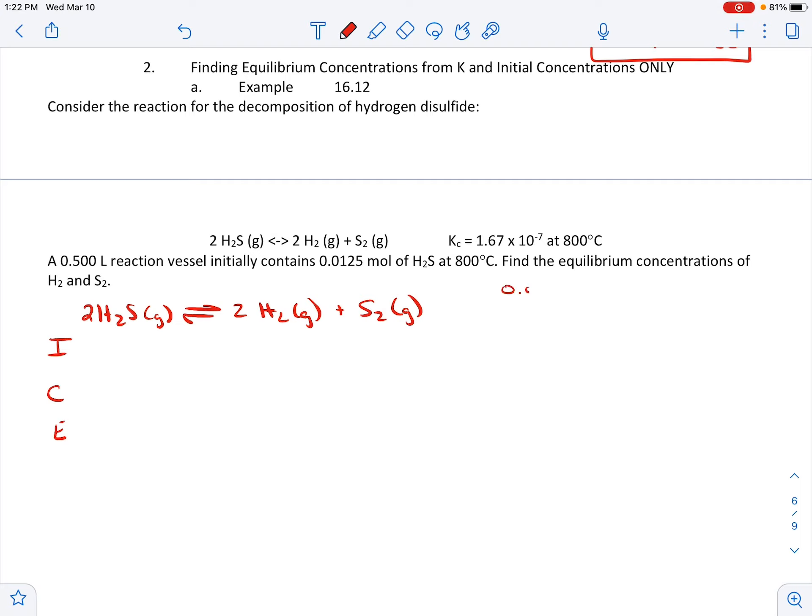For H2S, we're going to have to take 0.0125 and divide by 0.5 liters to get our molarity. We get 0.025. So that is our initial concentration here. These are going to be zero. Our change then is going to be minus 2X plus 2X. This is just going to be X because it's a single one. Those twos came from the two out front, our coefficients. We're going to combine these, so we've got 0.025 minus 2X. This is just going to be 2X and that's just going to be X.